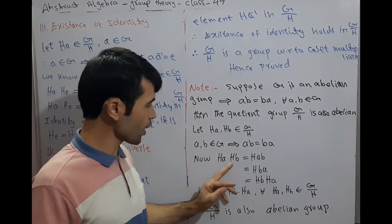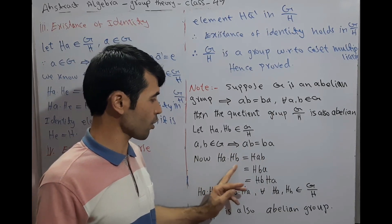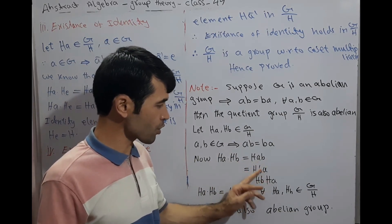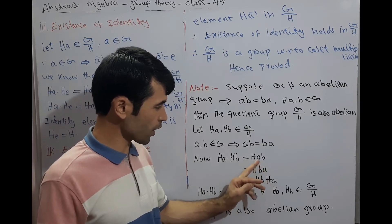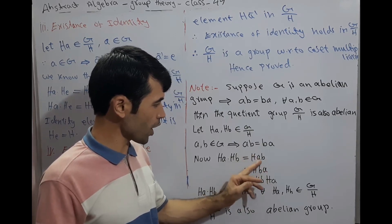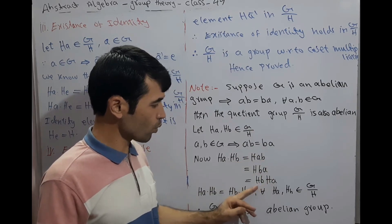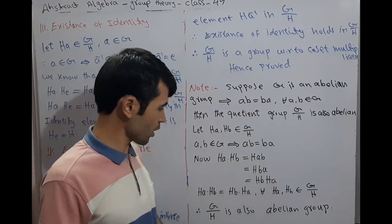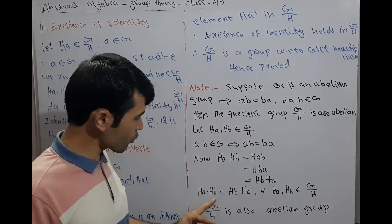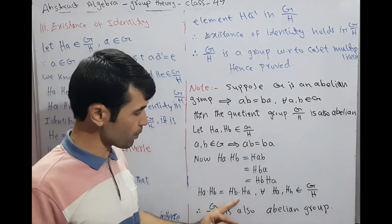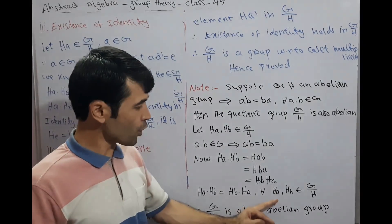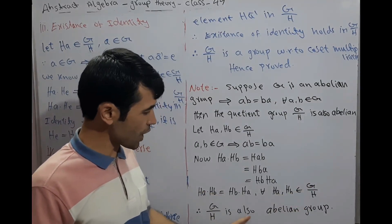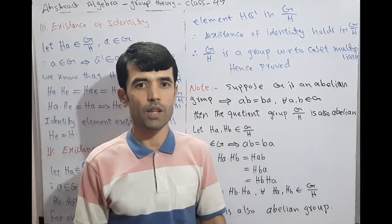Now HA·HB = H(AB) = H(BA), since AB equals BA in G (swapping A and B). This equals HB·HA. Therefore HA·HB equals HB·HA for all HA, HB belonging to G by H. Therefore G by H is also an Abelian group. Thank you.